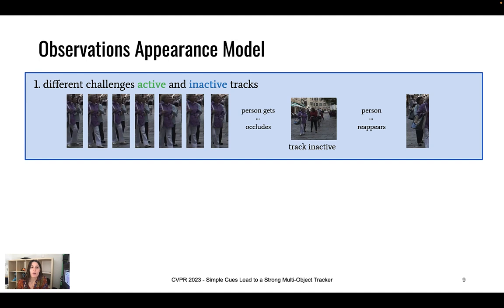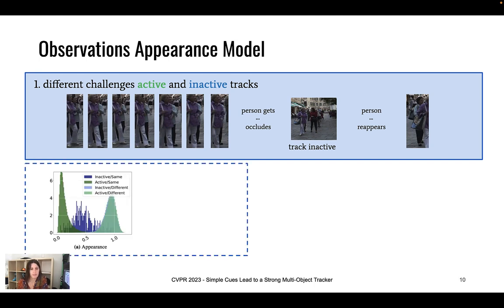To analyze this deeper, we generate appearance distance histograms. These histograms visualize the cosine distances between active tracks and new detections of the same and different classes in dark green and light green. In dark blue and light blue, we visualize the cosine distances between inactive tracks and detections of the same and different classes. We can see that the histogram of inactive tracks and detections of the same class is very widespread, while the distance histogram of active tracks and detections of the same class is very centered.